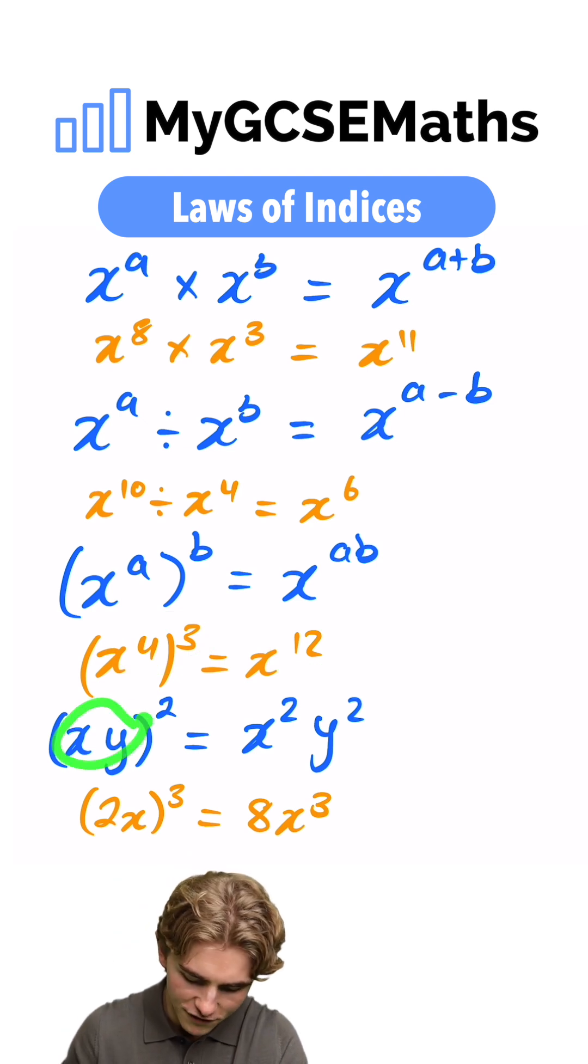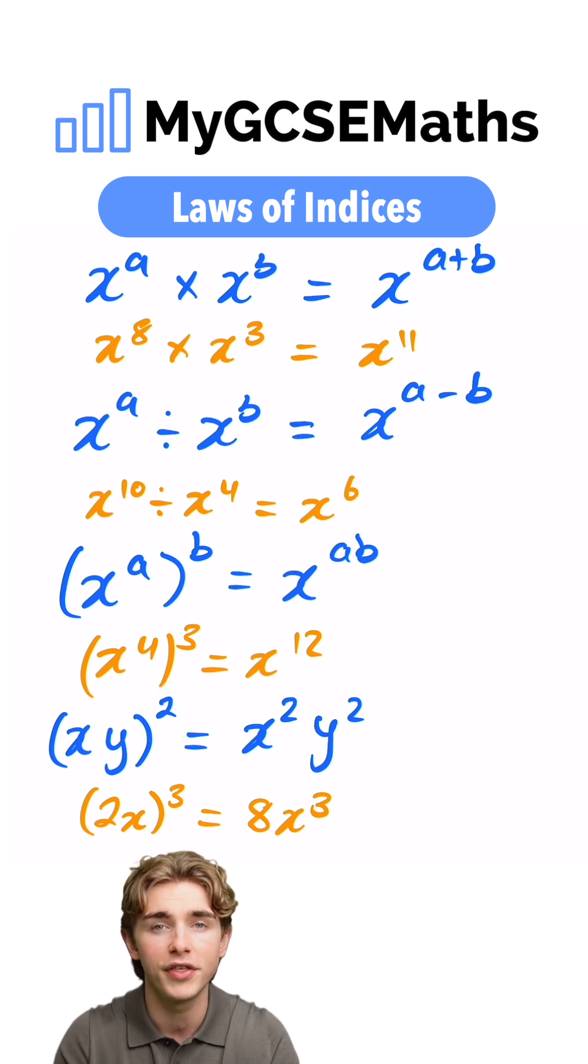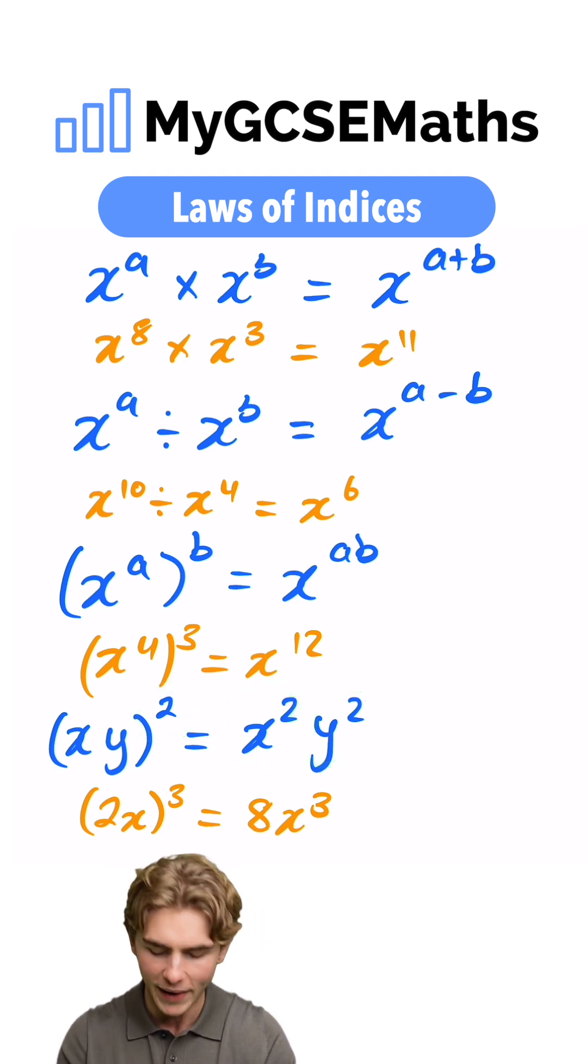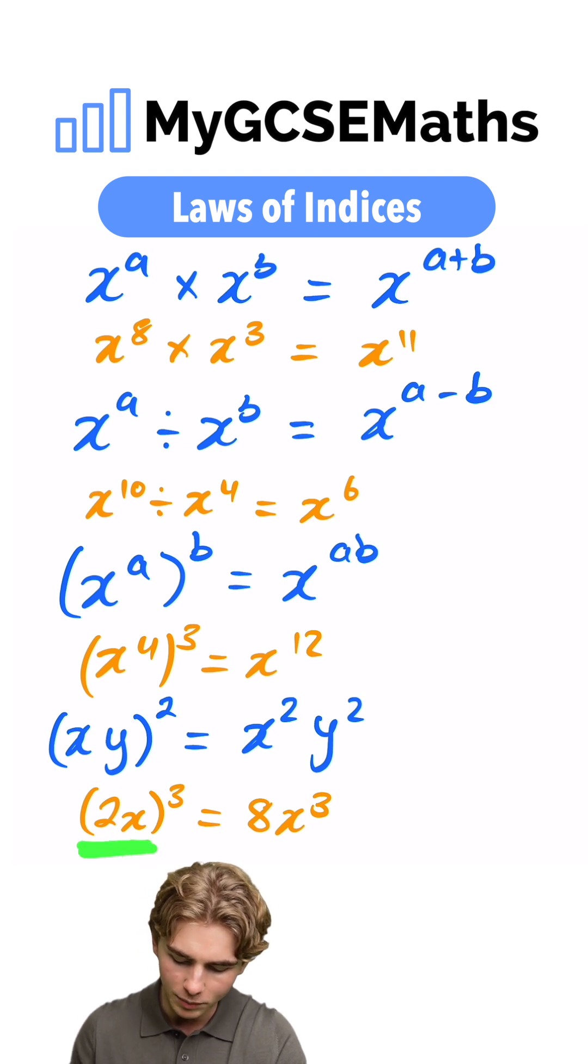Finally, if we have a couple of numbers inside a pair of brackets and we square the whole thing or raise the whole thing to a power, we have to raise all of the numbers inside that bracket to that power. For example, 2x cubed would be 2 cubed, which is 8, times by x cubed.